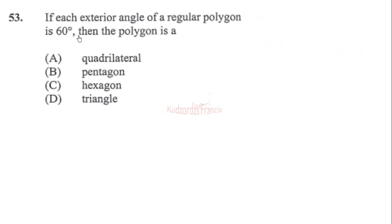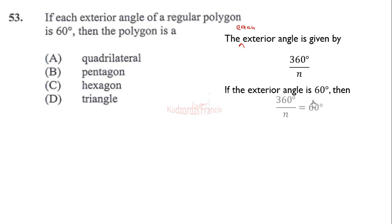Now let's look at 53. If each exterior angle of a regular polygon is 60 degrees, then the polygon is? Each exterior angle is given by 360 degrees over n. If the angle is 60, we equate this expression to 60 to get 360 over n equals 60 degrees. Now let's swap positions to get 360 over 60 equals n, which gives us 6. Therefore, a polygon with 6 sides is called a hexagon.